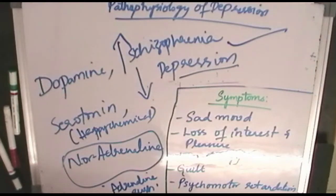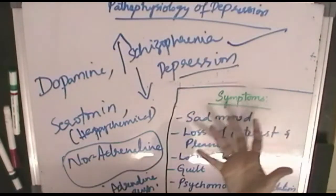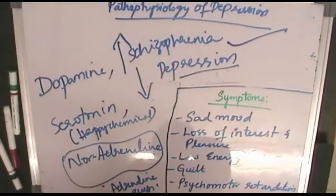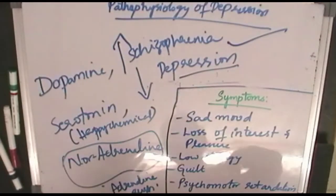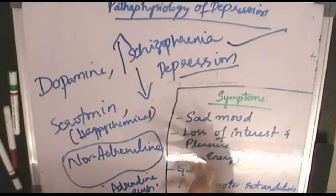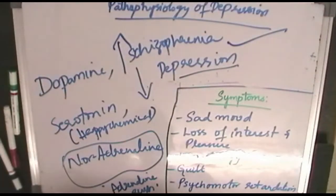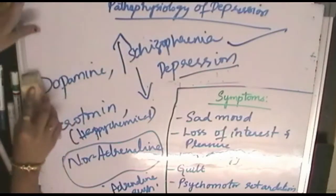In English there is a phrase called 'adrenaline rush' — when you are in extreme fear or extreme sensual pleasure, adrenaline rushes inside the body, increasing blood pressure, heart rate, pulse rate, and brain activity, all leading to increased physical activity. In depression, there are decreased levels of noradrenaline as well. So the principal actions of these three chemicals are now understood.